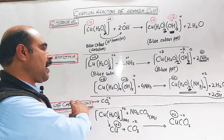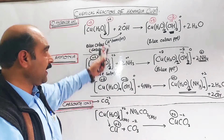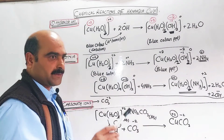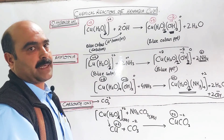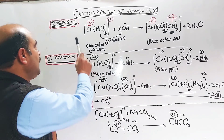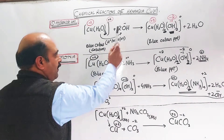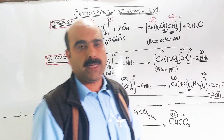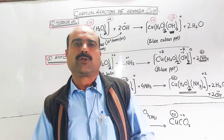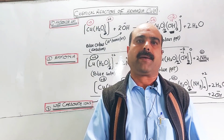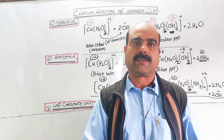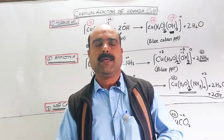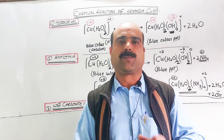So these were all about the chemical reactions of hexa aqua copper two ions, or complex ions of copper two, with hydroxide ions, with ammonia, and with carbonate ions. Thank you for watching. Students, the inorganic portion of second year chapter one and chapter two is now complete.